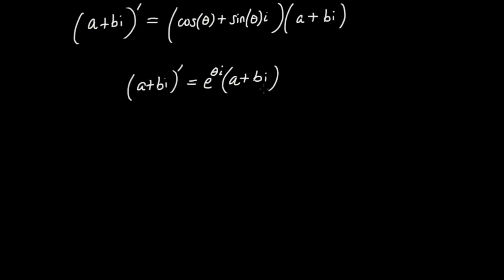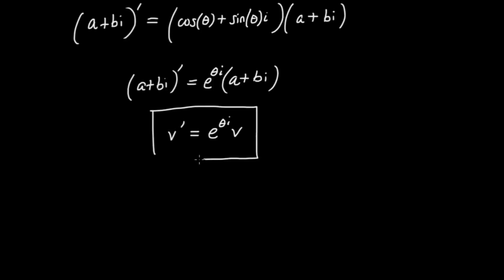So I can write this product as e to the i theta times (A plus Bi), and that's equal to the rotated version of A plus Bi. Furthermore, thinking of A plus Bi as the starting vector V, this formula can be rewritten in the most compact form as V prime equals e to the i theta times V. This is what's going on with rotations in the abstract sense — it's going to help us understand not only two-dimensional rotations, but also three-dimensional rotations and quaternions.